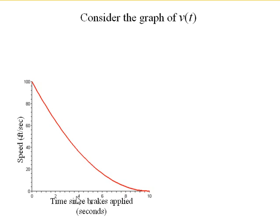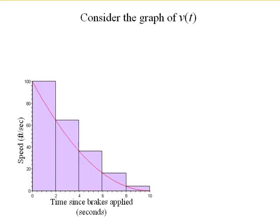Now, when we did each of those calculations, let's say our upper estimate, we did 100 feet per second times 2 seconds. Then we did 64 feet per second times 2 seconds, and so on and so forth. What that gives us, what we can represent that by, are these rectangles.